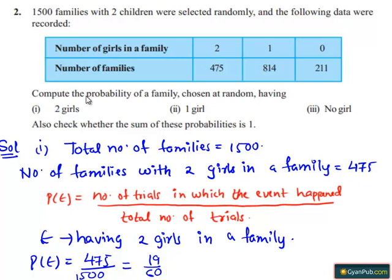Therefore, the probability of a family chosen at random having two girls is 19/60.